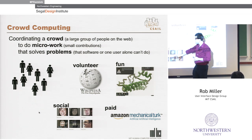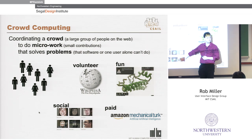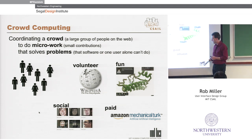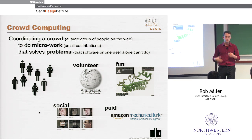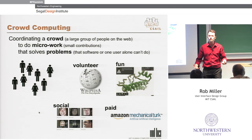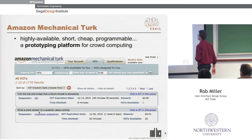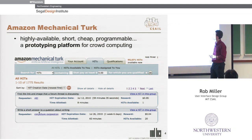Wikipedia does really well by motivating volunteers making small contributions. There's been big growth in games with a purpose — for example, Foldit from the University of Washington gets people to solve protein folding problems much better and faster than software can. Sometimes I think of Facebook as a global face recognition problem being solved by crowds for social reasons — they're tagging their friends. A lot of the systems I'm going to talk about today use paid crowds, and we build a lot of our prototypes on top of Amazon Mechanical Turk.